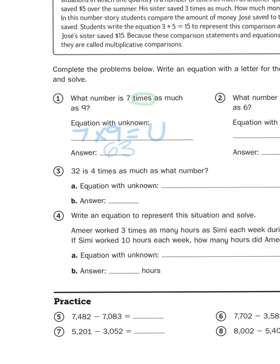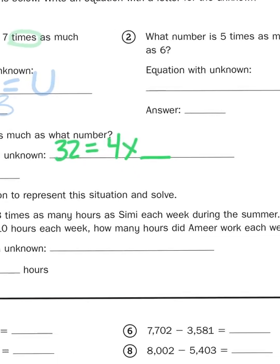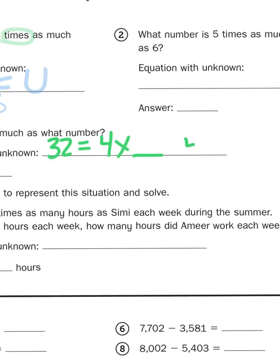So let's take a look at number three. It says 32 is four times as much as what number. Well, this again is just another problem that has multiplication at the heart of it because it shows us the word times in the number story. But this is a little different. 32 is four times as much as what number. So if I were to write this out, I could write it like this: 32 equals four times something, or I could write it as four times something equals 32.